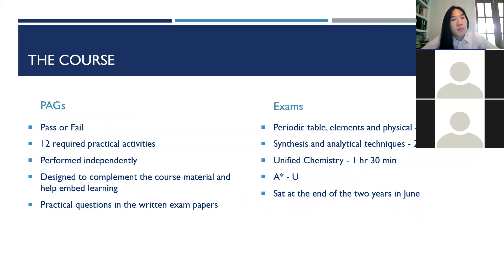Okay, so a little bit more about the practical endorsement or PAGs. So it's a pass or fail. Some universities will require you to have passed it, and obviously we'll make sure you pass it. You are required to do 12 practicals, so at GCSE you're required to do six, at A level you're required to do 12.